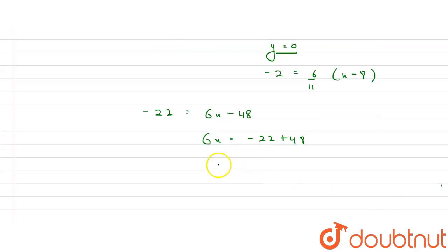From here value of x will be, solve this, 48 - 22 that will be 26 divided by 6. So x will be, solve this further, here it will be 3 here, it will be 1 and 3.